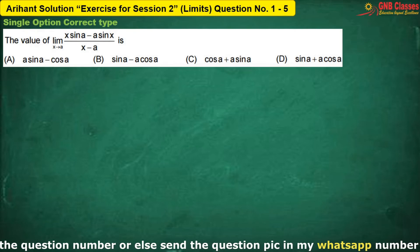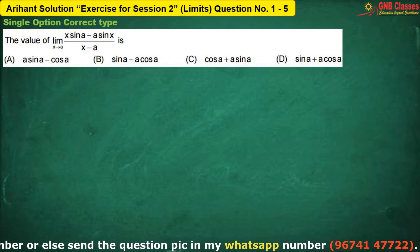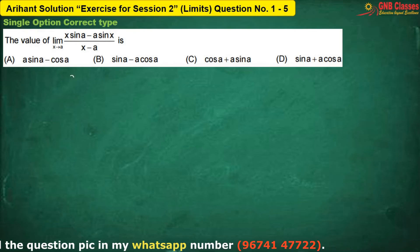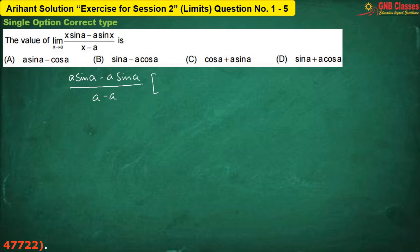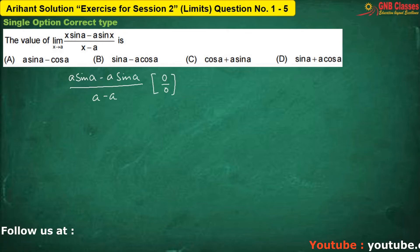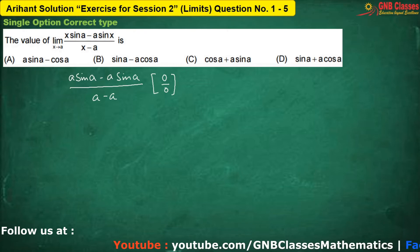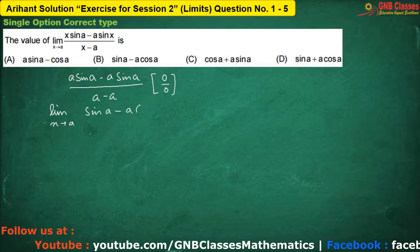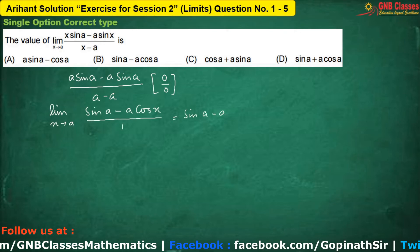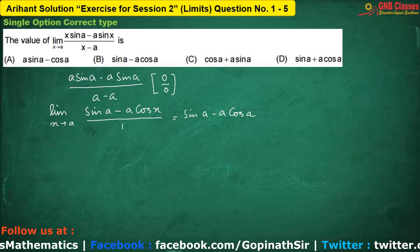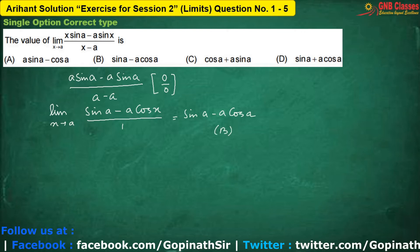In this problem, if I put the limiting value in the given function, we are going to get in the numerator and in the denominator. So the limiting form of the given limit is zero by zero. Hence, we are applying L'Hôpital's rule — differentiating numerator and denominator separately. Now, if I put the limit, we are having. Hence, option B is correct.